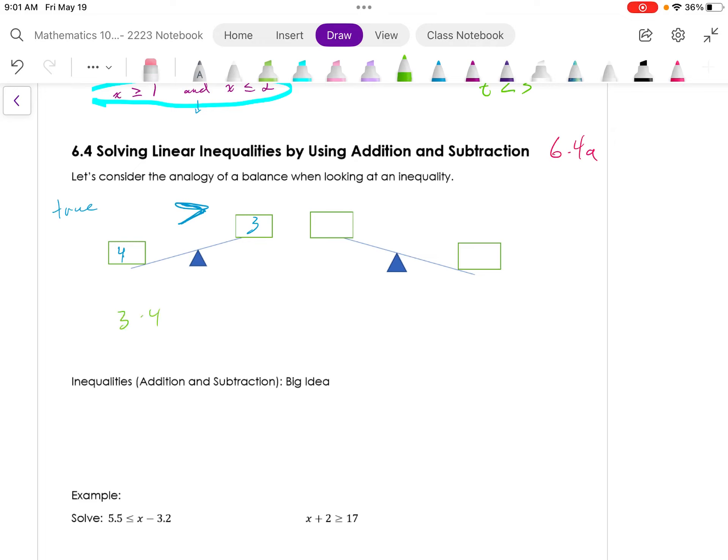How about multiplication? 3 times 4 and 3 times 3. So on the left-hand side, we have 12 is greater than 9. Well, that holds true.